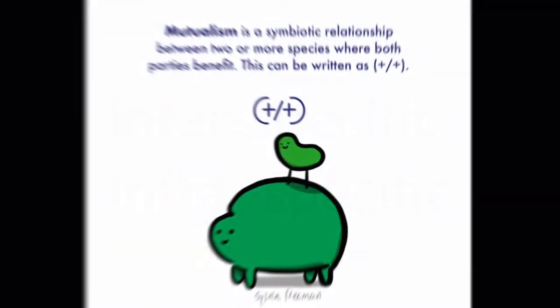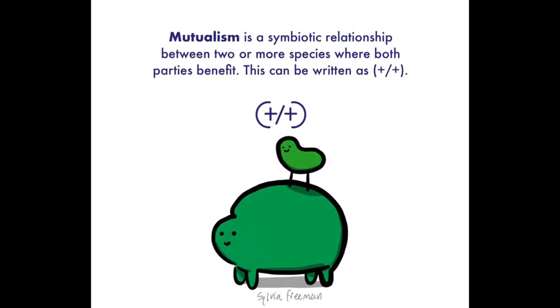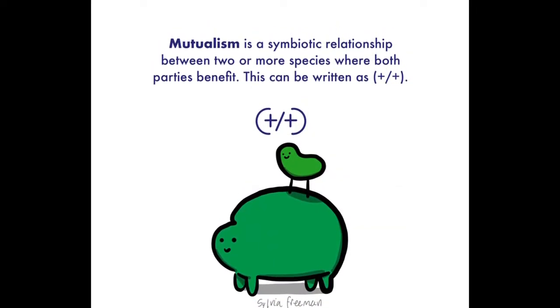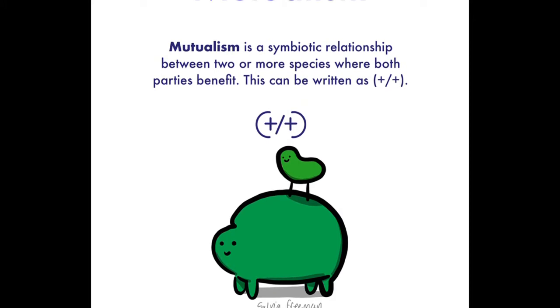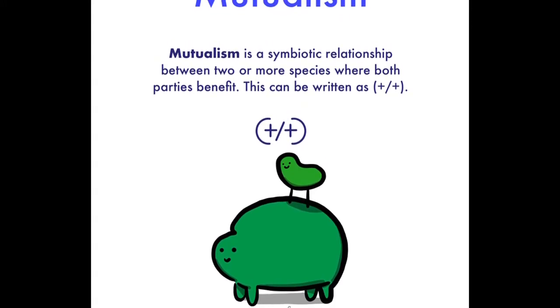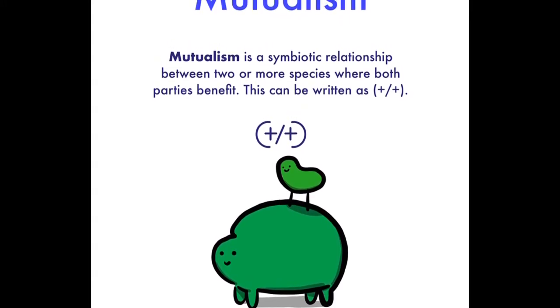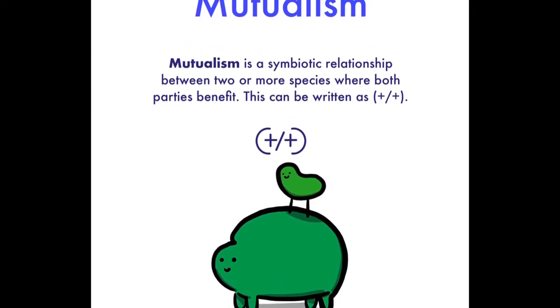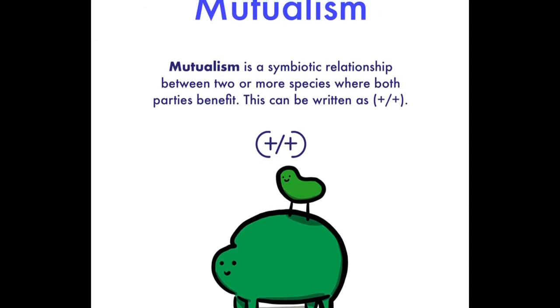So what is mutualism? Mutualism is an interaction between two or more species, where both the species derive mutual benefits. Let me explain with examples.